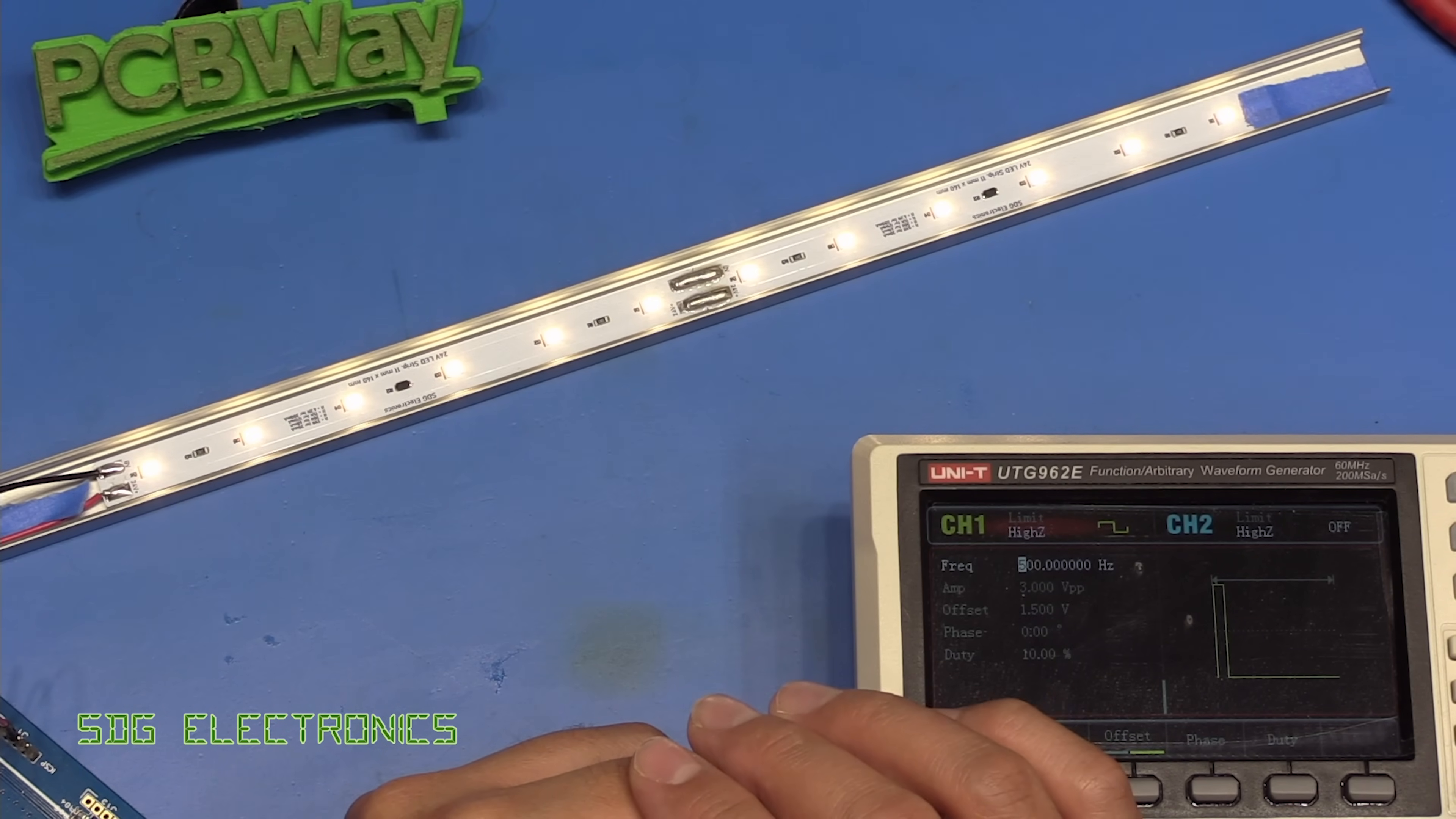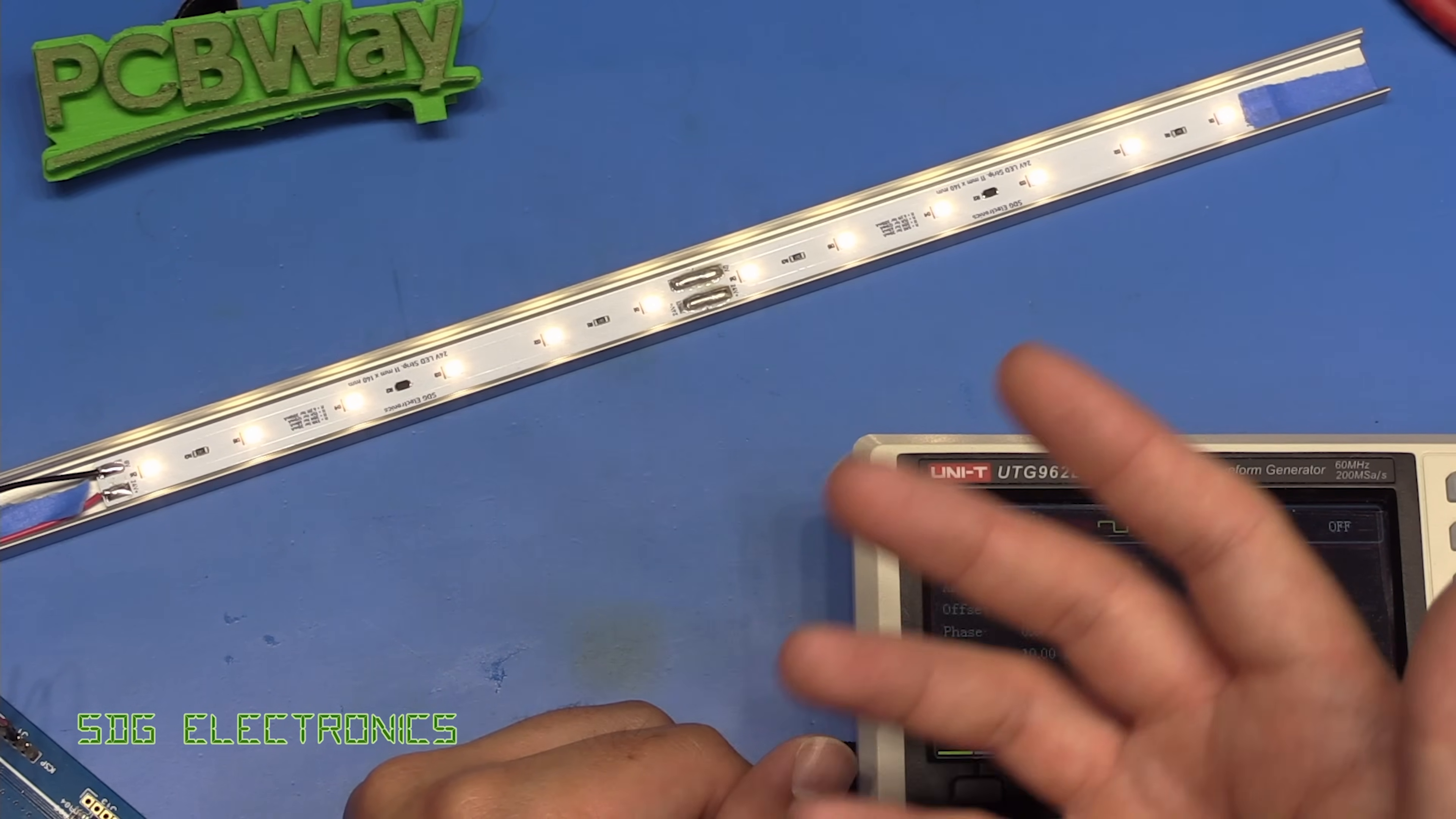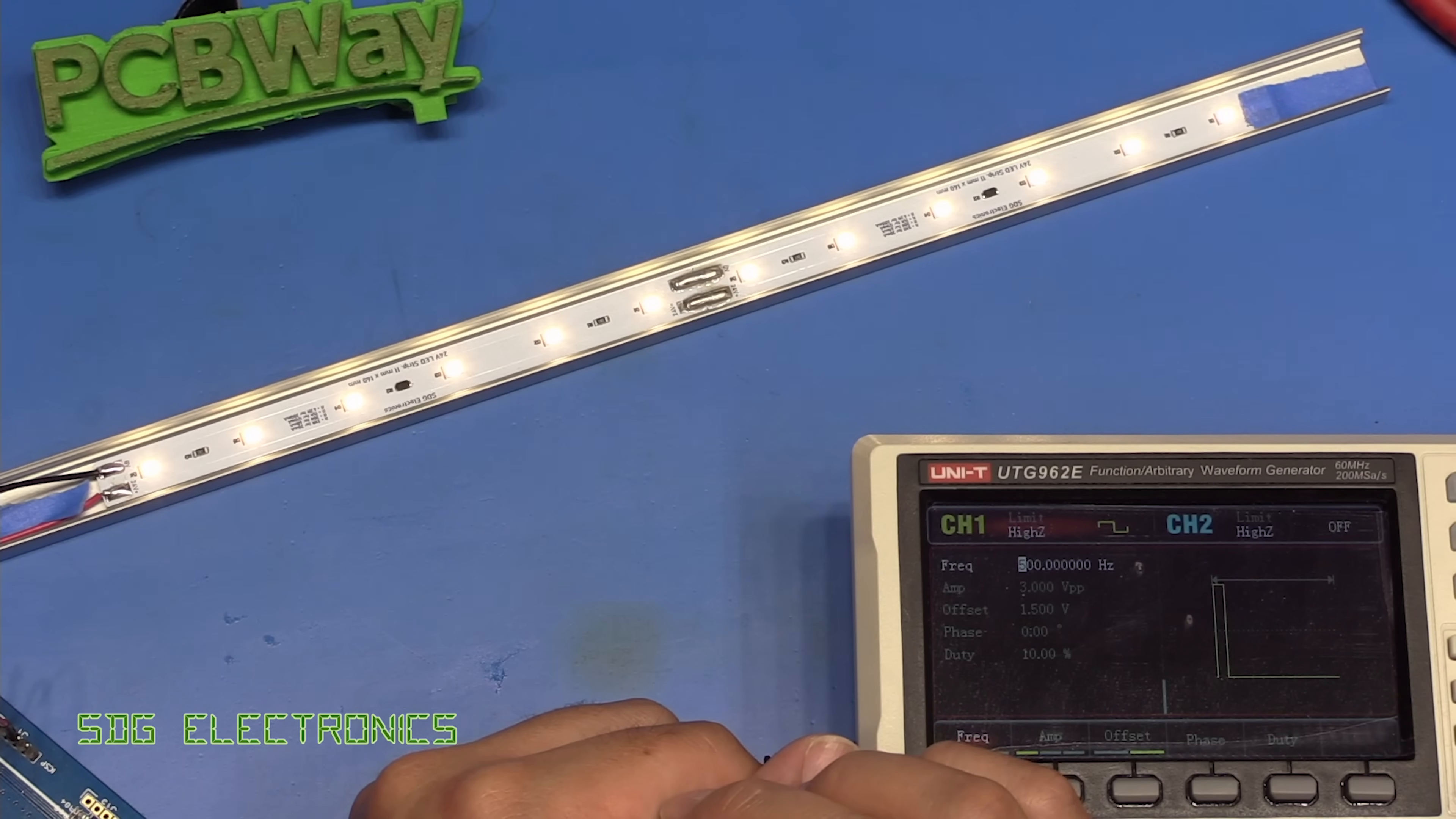so that all seems to be working quite nicely and all that remains is for me to now desolder a bunch of resistors on these aluminium boards and replace them with these constant current drivers and I hope some of you found this video useful because probably not all of you have come across these two pin constant current drivers before